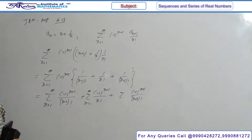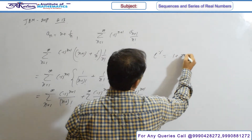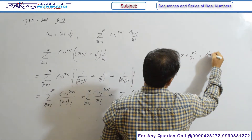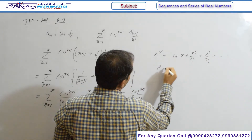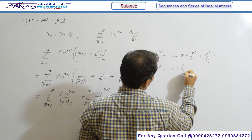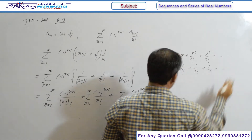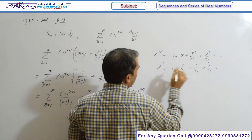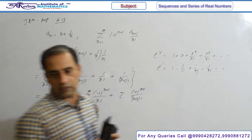Recall that the expansion of e^x is 1 + x + x²/2! + x³/3! and so on. So the value of e is 1 + 1/1! + 1/2! + 1/3! and so on. Since there are alternating signs here, applying (-1) gives e^(-1), with plus-minus alternating signs.